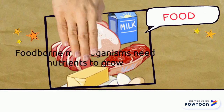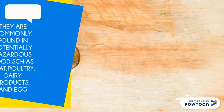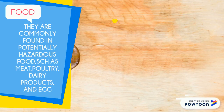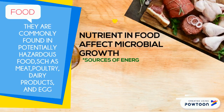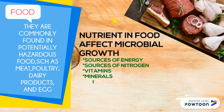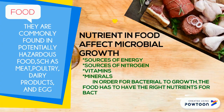Food: food-borne microorganisms use nutrients to grow. They are commonly found in potentially hazardous foods such as meat, poultry, dairy products, and eggs. Bacteria require a source of energy, source of nitrogen, vitamins, and minerals in order to grow. The food has to have the right nutrients for bacteria.